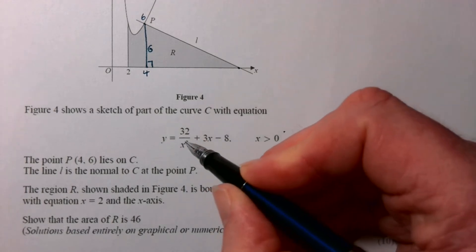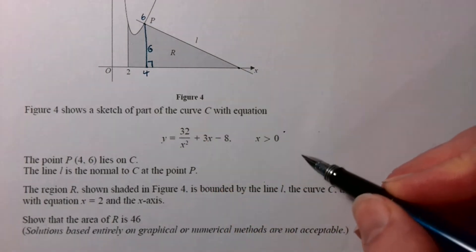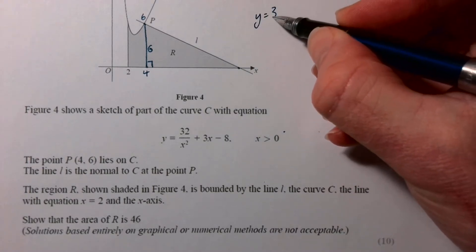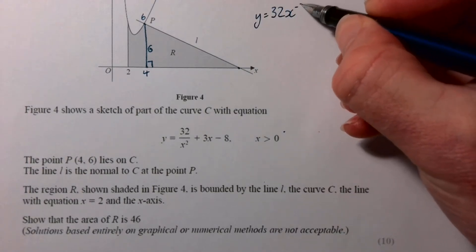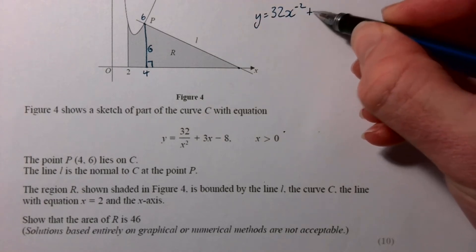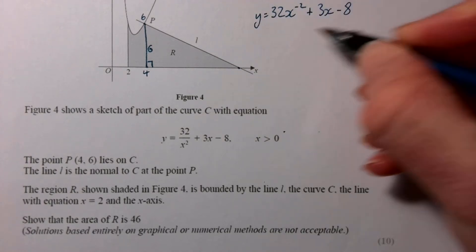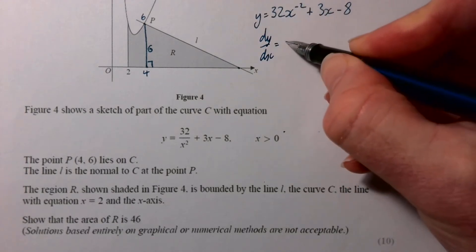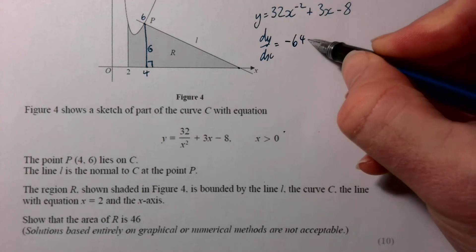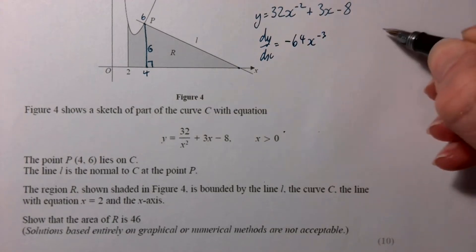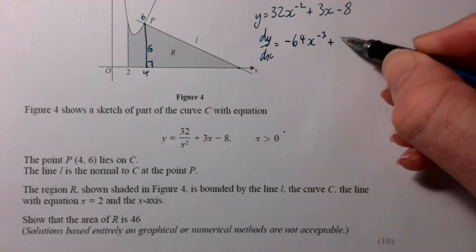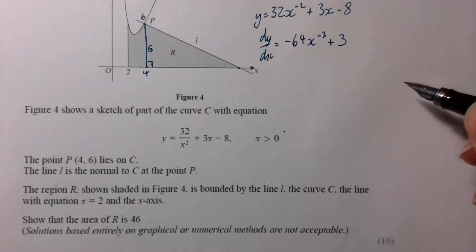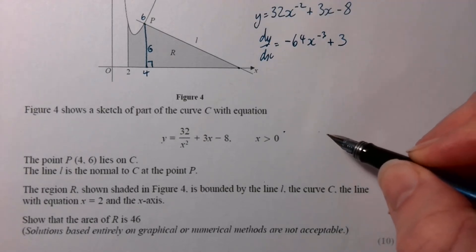So to get the gradient, we need to differentiate what we've got there. I'm going to start off by writing it as a power of x, like that, to the negative 2, 3x take 8, and then differentiate that. Times my negative 2 gets us negative 64, drop the power by 1, so 3 plus 3, x drops off, and the constant just falls away.